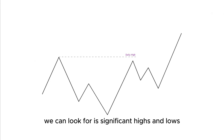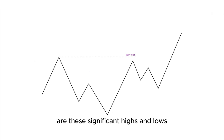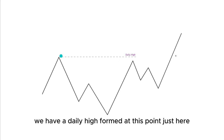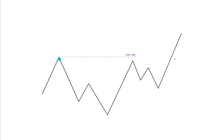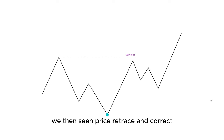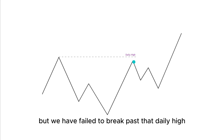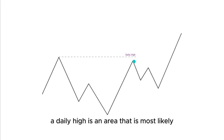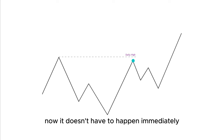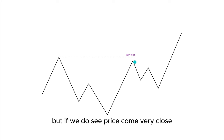Another form of inducement we can look for is significant highs and lows — these could be swing highs, daily highs, weekly highs, or monthly highs. In this example, we have a daily high formed at this point; price pushed away, created a new low, we had a pullback and a new lower low, then price retraced back up towards the daily high but failed to break past it. A daily high is an area most likely going to have a liquidity sweep at some point or another.